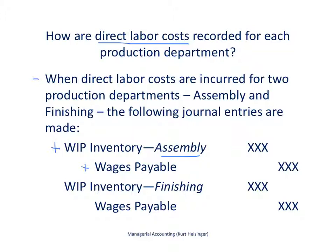If we paid cash right away, we'd credit cash, which reduces cash. Similarly, if the finishing department also has direct labor costs, we would increase work in process inventory for those direct labor costs, and also increase wages payable for those direct labor costs.